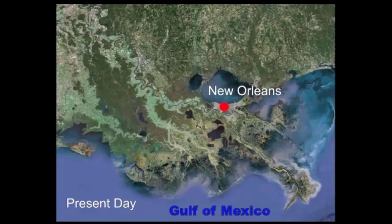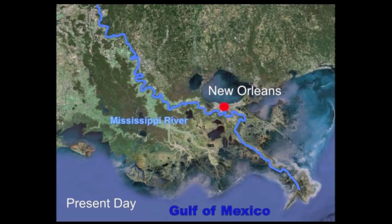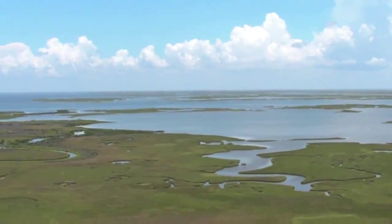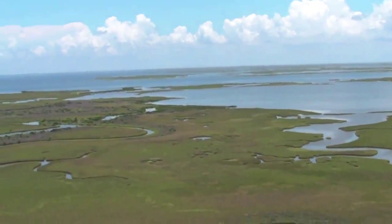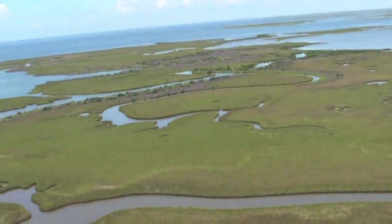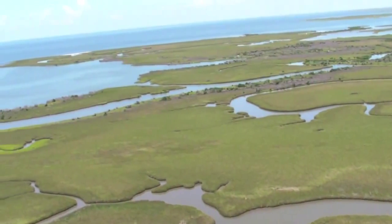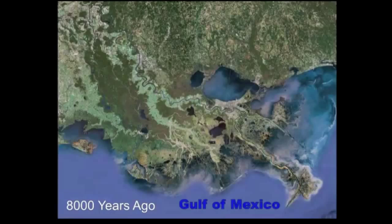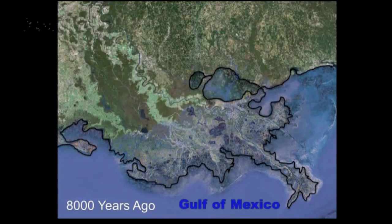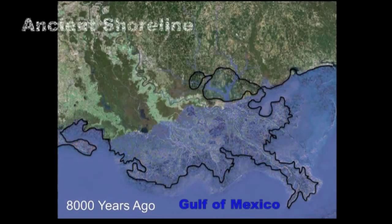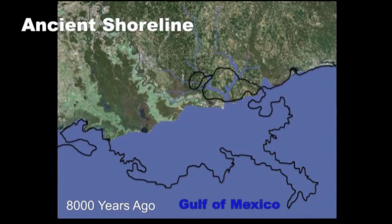The Louisiana coast is a dynamic system, built in part by the action of the Mississippi River. To understand how subsidence affects the Mississippi River Delta and its wetlands, we first have to go back a few thousand years. Because glaciers were melting 8,000 years ago, sea levels were higher at that time, so much of the present-day coast was under water.